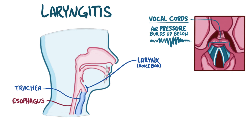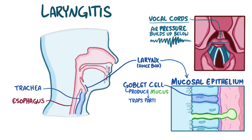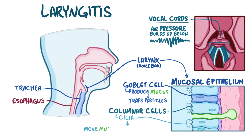Like the rest of the respiratory tract, the walls of the larynx are made up of mucosal epithelium. The mucosal epithelium contains goblet cells, which produce mucus to trap small foreign particles, as well as columnar cells, which have cilia — tiny hair-like projections that move the mucus up the respiratory tract so that it can be coughed out.